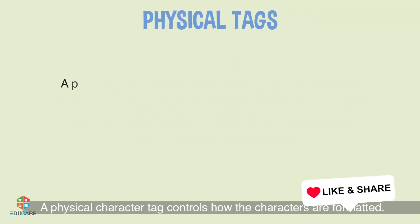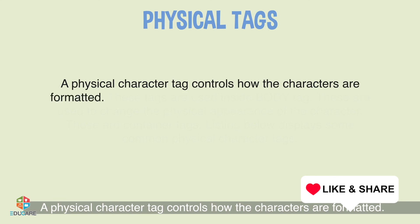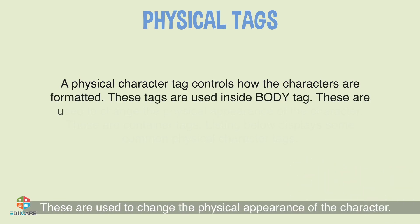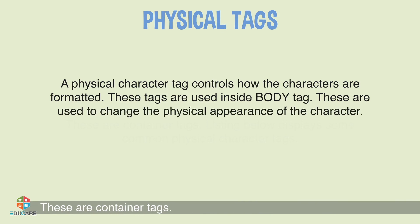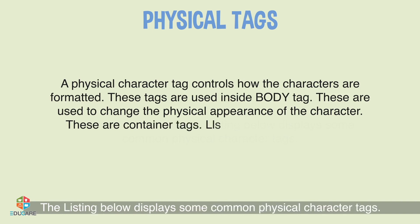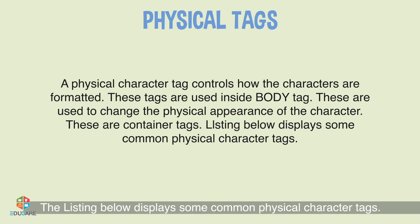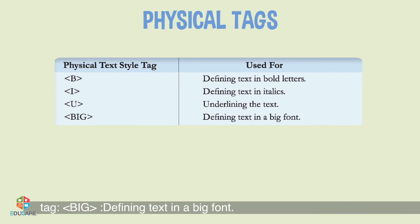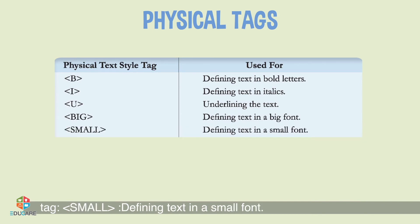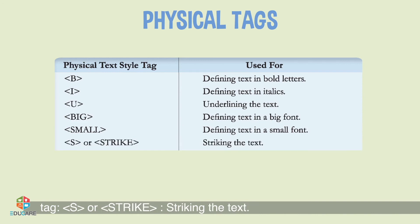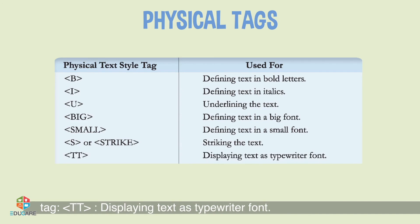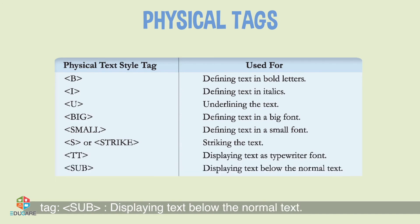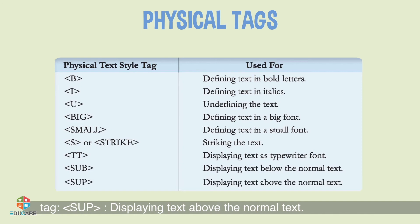Physical Tags: A physical character tag controls how characters are formatted. These tags are used inside the body tag to change the physical appearance of characters, and are container tags. Tag B defines text in bold. Tag I defines text in italics. Tag U underlines the text. Tag Big defines text in a big font. Tag Small defines text in a small font. Tag S or Strike strikes through the text. Tag TT displays text in typewriter font. Tag Sub displays text below normal text (subscript). Tag Sup displays text above normal text (superscript).